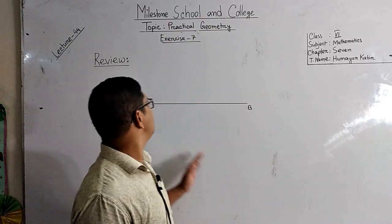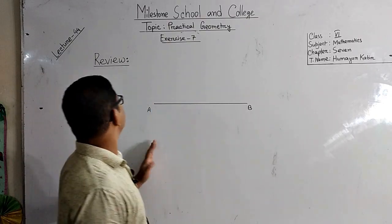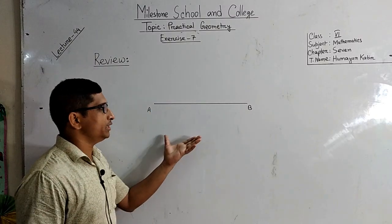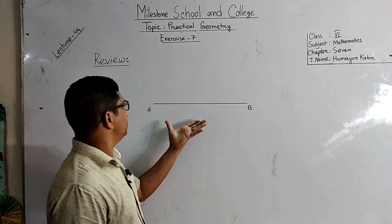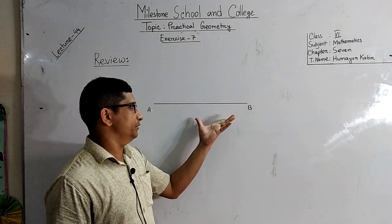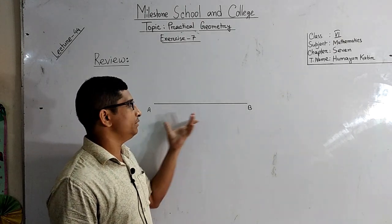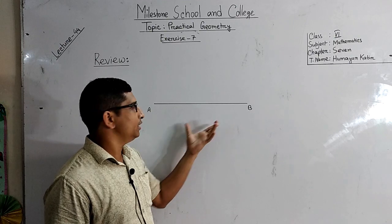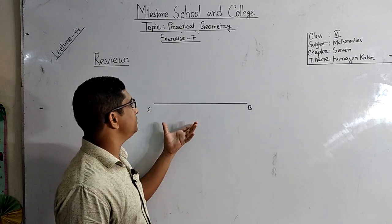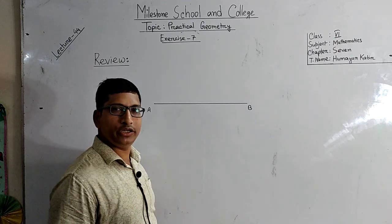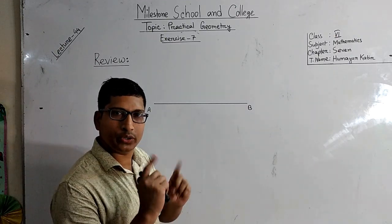Students, at first we will review our previous lesson, after that we will start our today's lesson. Now review - look at here, there is given a line segment AB. Now we will divide this line segment into two equal parts.